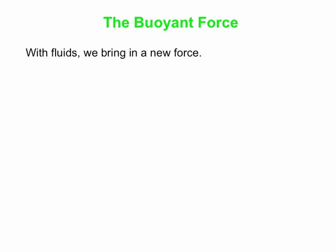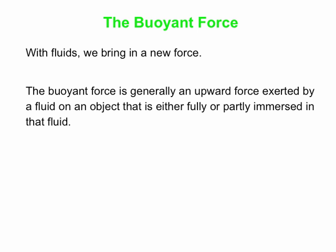We're going to start talking about the buoyant force — a new type of force applied by a fluid to an object. In general, it's an upward force exerted by a fluid. Next time we'll see what the origin of this buoyant force is; it's associated with pressure being different at different places in the fluid. Generally, you get an upward force exerted by the fluid on an object that is either fully or partly immersed in that fluid.